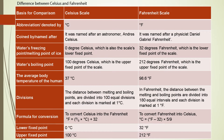In the Celsius scale, the water freezing point is called the lower fixed point and it is denoted as 0°C. In the Fahrenheit scale, the water freezing point is also the lower fixed point and it is 32°F. The boiling point of water is the upper fixed point of the Celsius scale, denoted as 100°C, and in the Fahrenheit scale it is marked as 212°F.